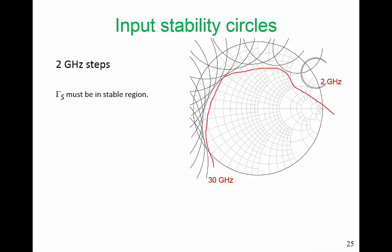For 2 GHz, we want to be outside this circle, anywhere in this region. And this is 2 GHz, and then we gradually increase in 2 GHz steps up to 30 GHz. So here's our 30 GHz stability circle. We want to avoid being inside this region at 30 GHz.